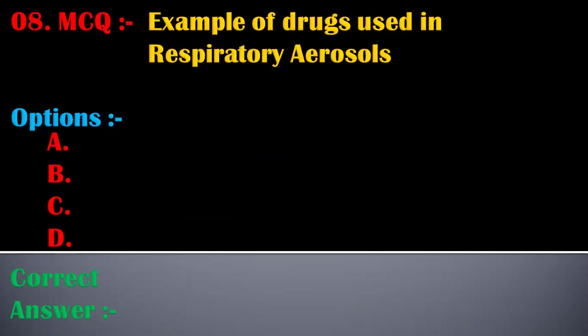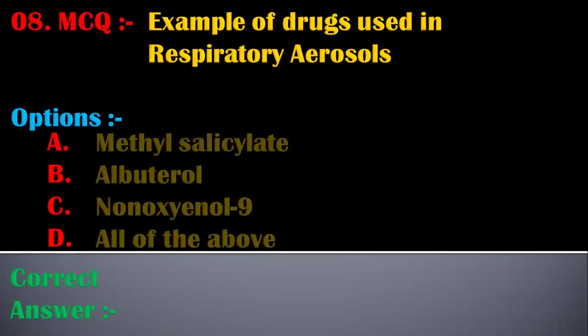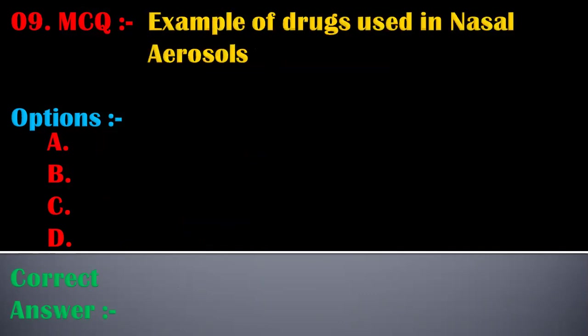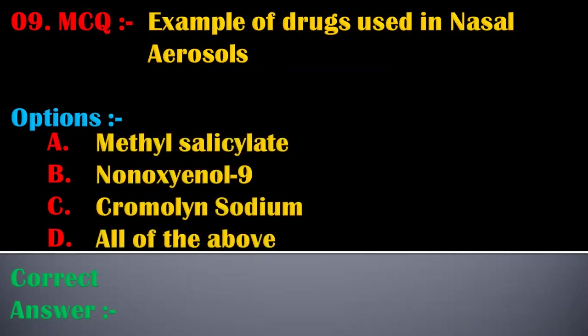The eighth MCQ is: example of drugs used in respiratory aerosols — options are: A) methyl salicylate, B) albuterol, C) nonoxynol-9, D) all of the above. The correct answer is B, albuterol. Albuterol is an example of a drug used in respiratory aerosols.